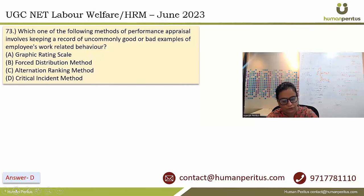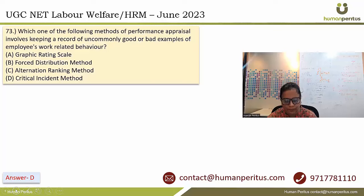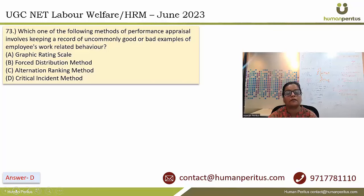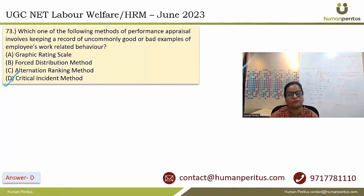Which method of performance appraisal involves keeping a record of uncommonly good or bad examples of an employee's work-related behavior? That is the critical incident method. The correct option is option D.